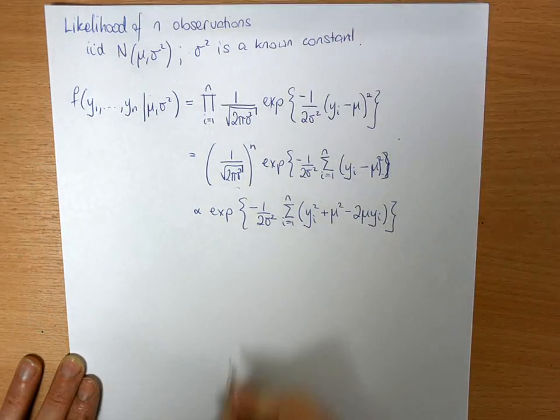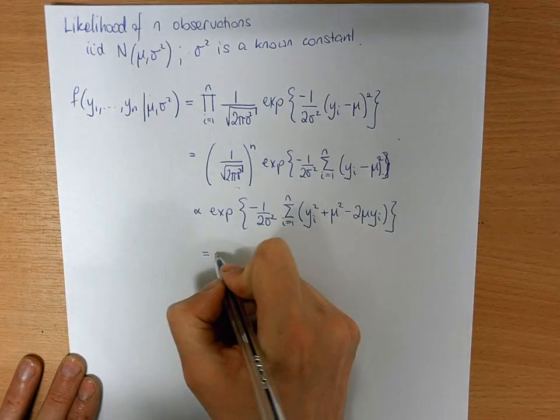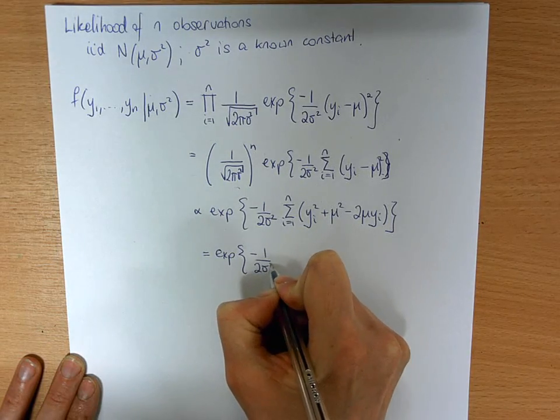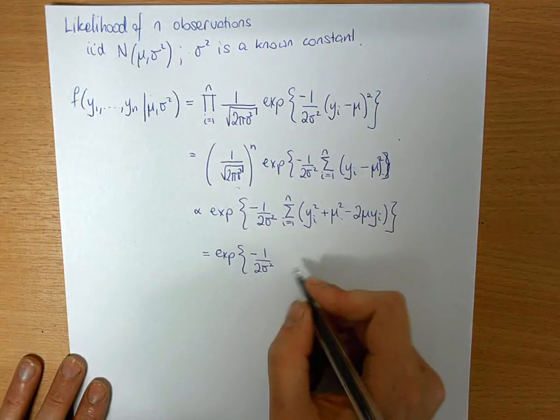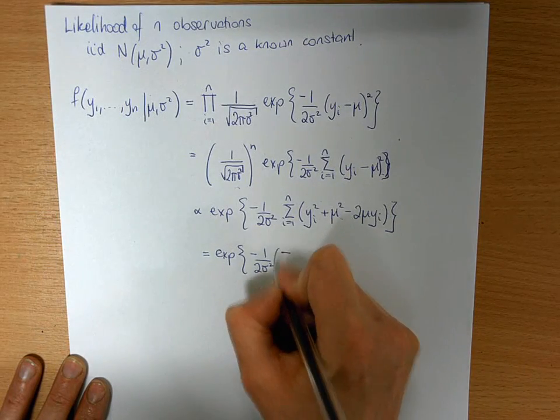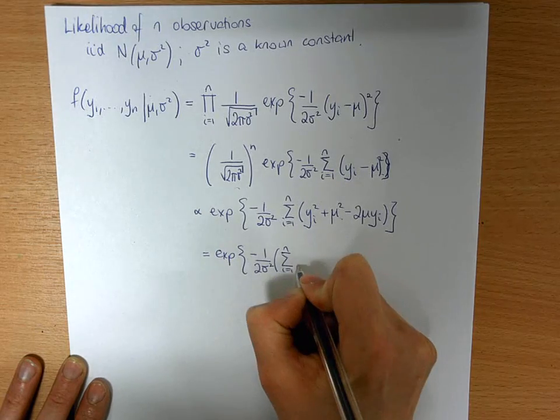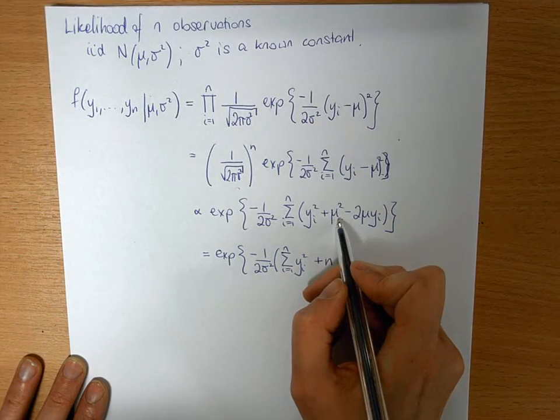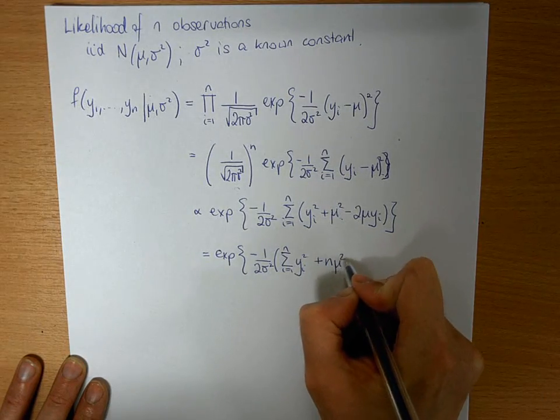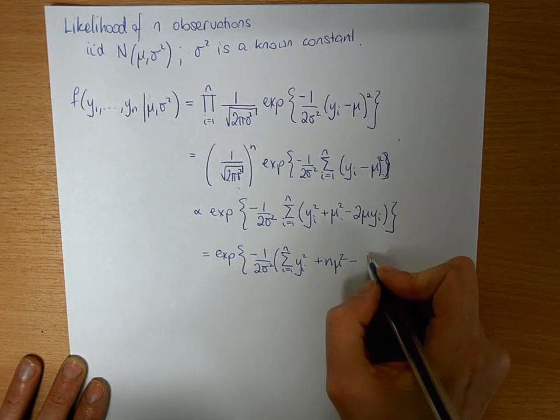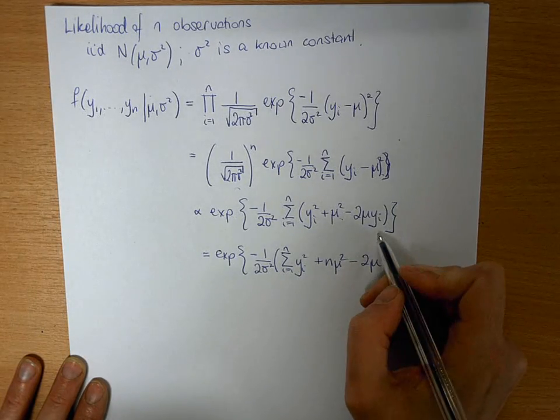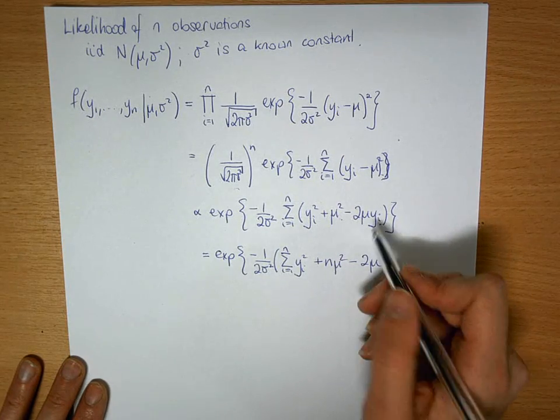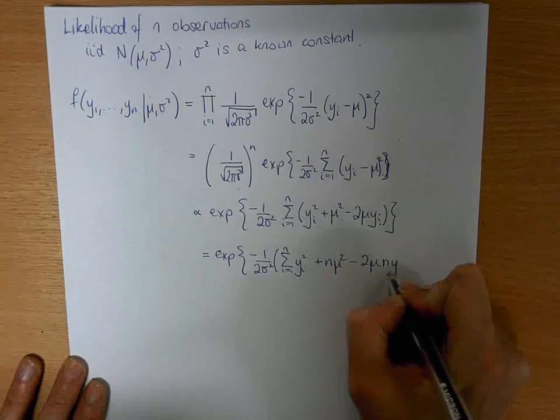Which in turn is equal to the exponential of minus 1 over 2 sigma squared. If we do these in components, it's the sum i equals 1 to n of yi squared plus n times, because you've added this up n times, mu squared minus 2 mu. Well, the sum of yi from 1 to n is n times the mean, n y bar.